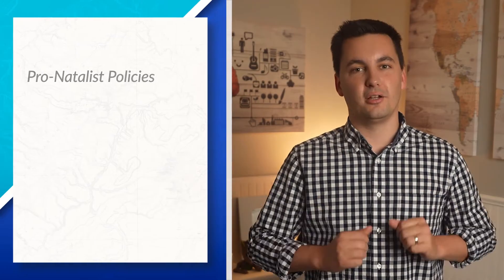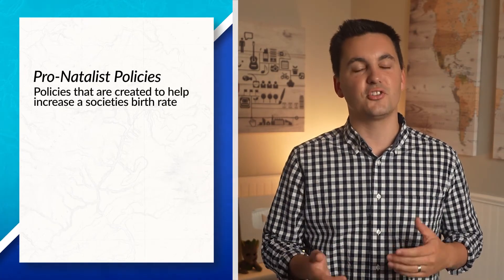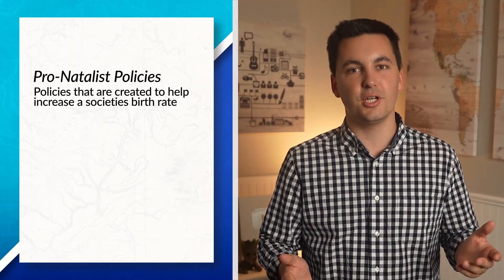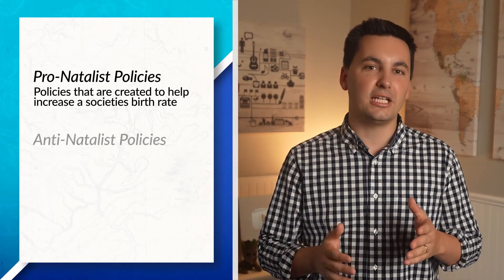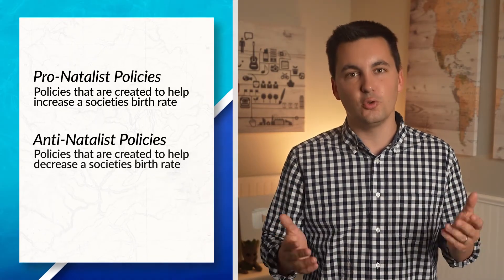When it comes to government policies and birth rates, we can see policies fall into two categories: pronatalist policies, which promote citizens to have more children, and antinatalist policies, which seek to reduce birth rates. We will talk more about these policies in our Unit 2 Topic 7 video.